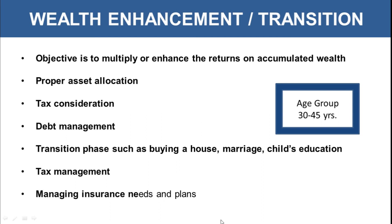At the transition stage, managing insurance needs is also important. After the age group of 30 to 45 years, if you take insurance it will cost very high premiums because the risk to your health increases. It is advisable to take insurance policies at the age of 30 to 35 years. You can go for a term cover as life insurance, and for health insurance a family floater plan which covers all family members. This addresses the needs of all dependents who would be affected if your life or health is impacted.